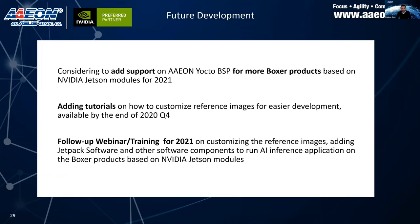Future developments for the Aeon Yocto BSP include adding support for more Boxer products in 2021 based on customer interest. We are already working on new tutorials and customized reference images for easier development, showcasing how to customize images — available later this year. In 2021, a follow-up webinar will demonstrate how to customize reference images, add Jetpack software and other components, and run AI inference applications on our Boxer units.